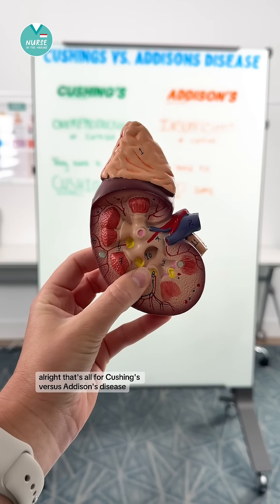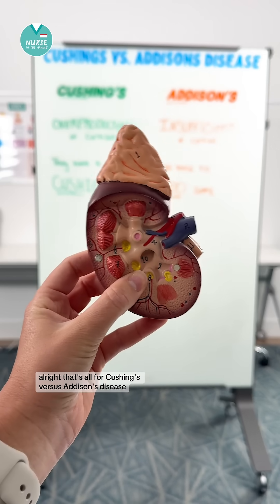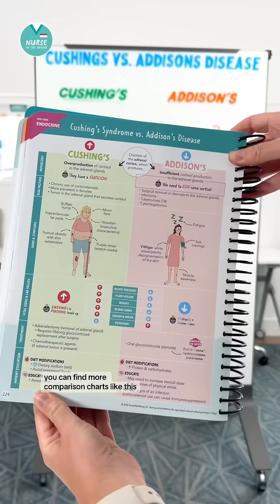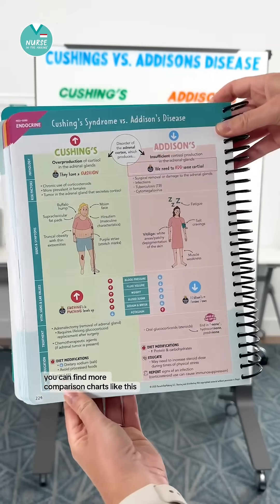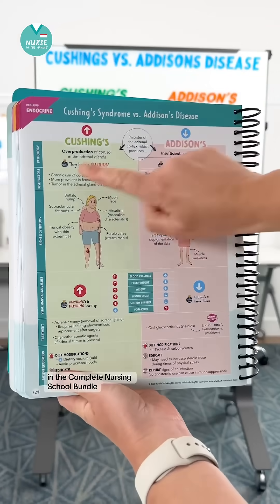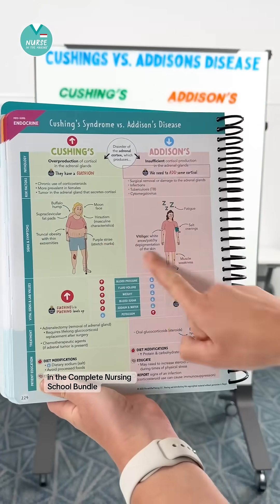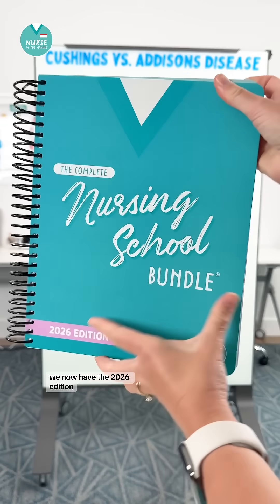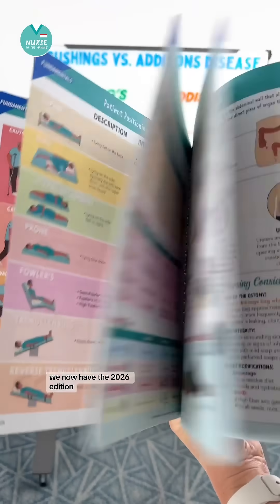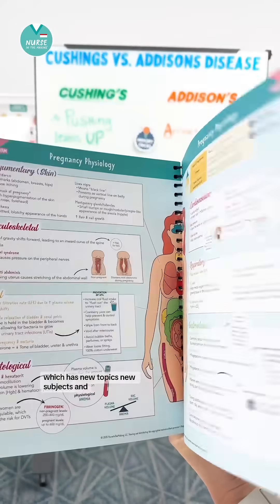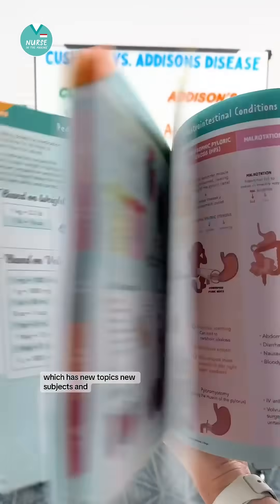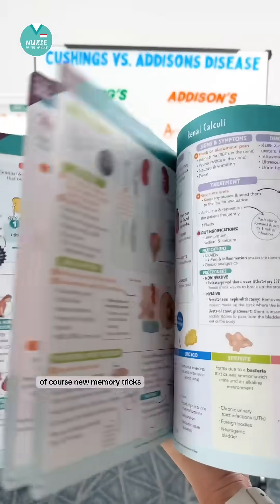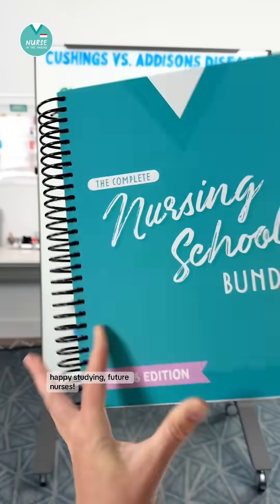That's all for Cushing's versus Addison's Disease. You can find more comparison charts like this in the Complete Nursing School Bundle. We now have the 2026 edition, which has new topics, new subjects, and of course new memory tricks. Happy studying, future nurses.